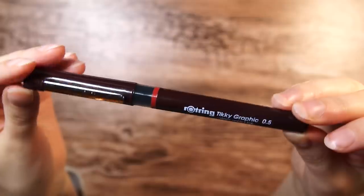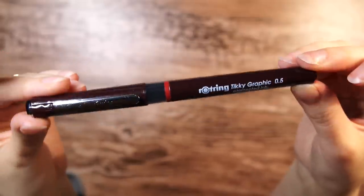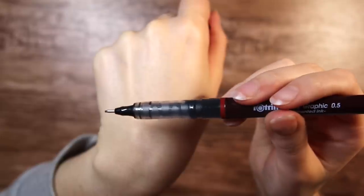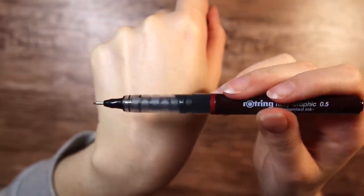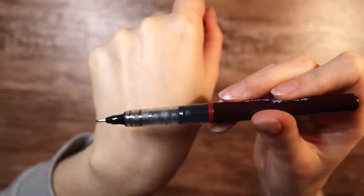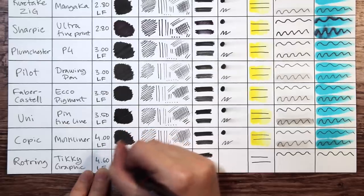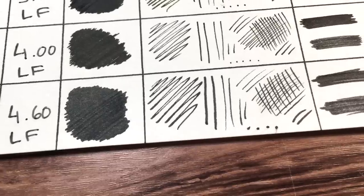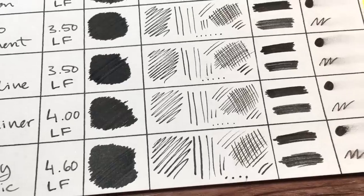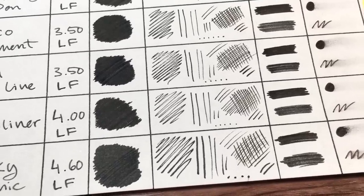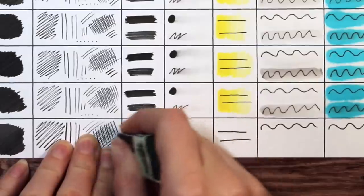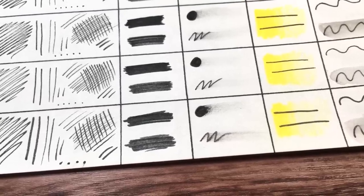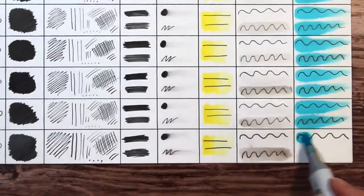Then lastly we have the most expensive one, the Rotring Tiki graphic for about $4.60 and it is lightfast. And I've heard a lot about the Rotring pen so I just had to include it in this test. This one looks really fancy and from what I've understand this is a well-known brand among engineers and architects. It is doing pretty well in the pigment test, about the same as the previous ones. It is juicy and smooth to draw with. It does fade quite a bit in the erase test and it is also very smudgy. But it passes without any trouble in the water and the marker test.